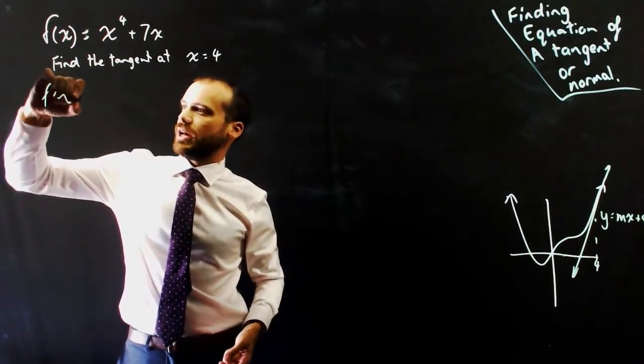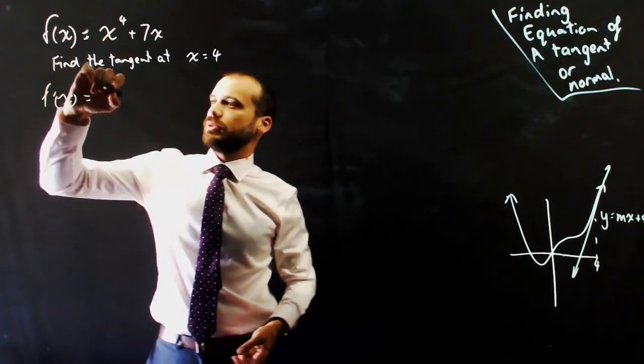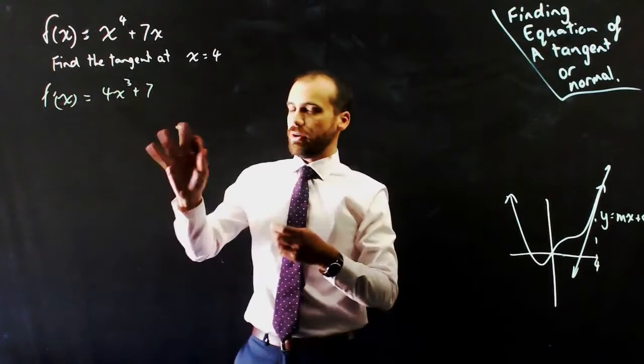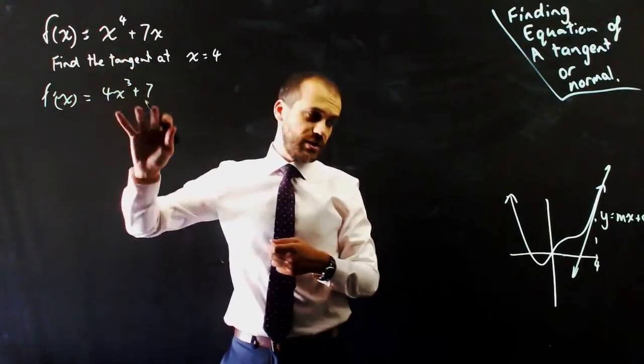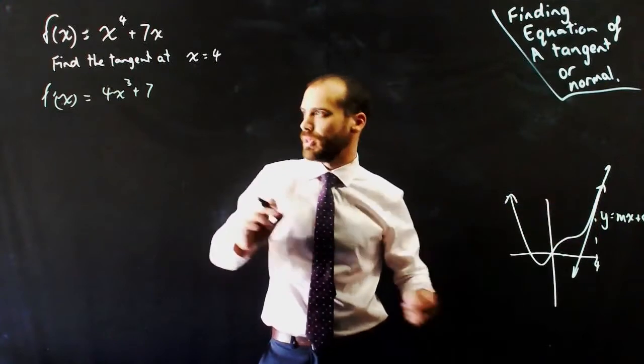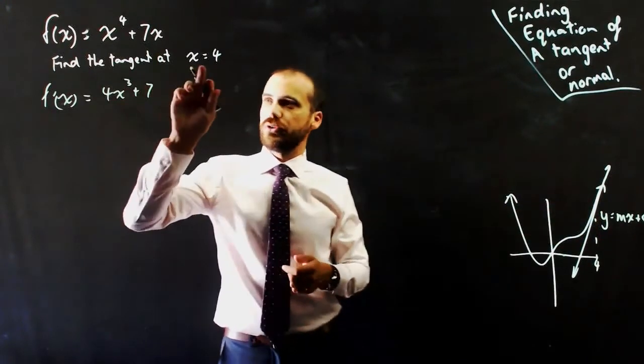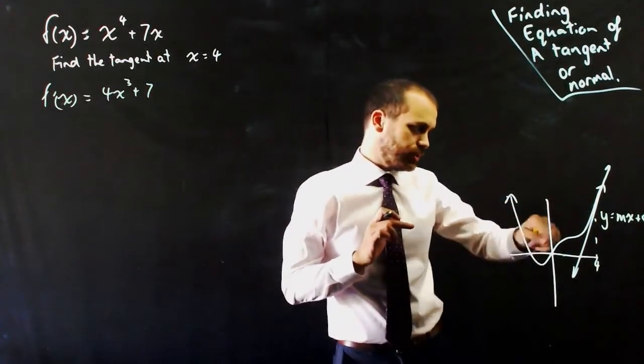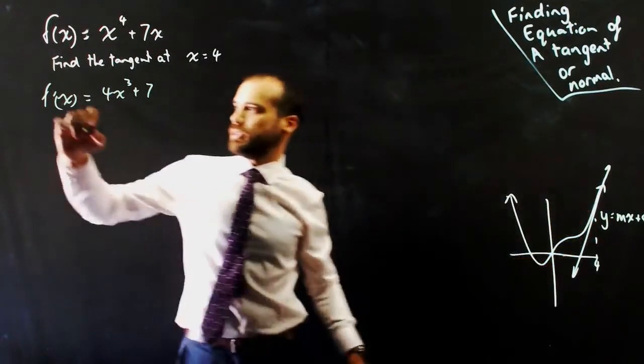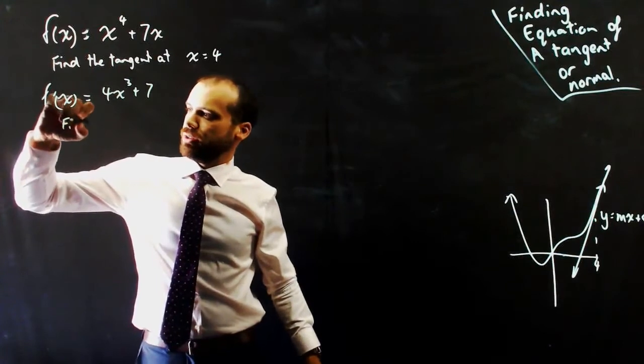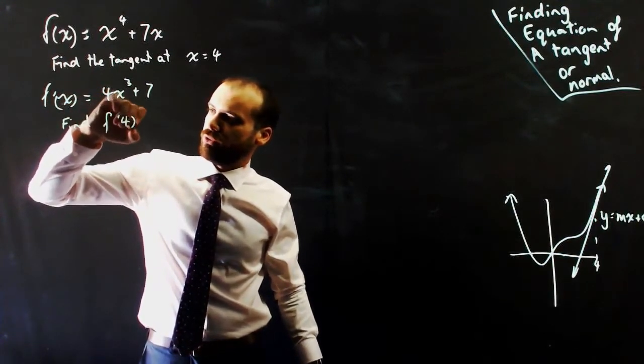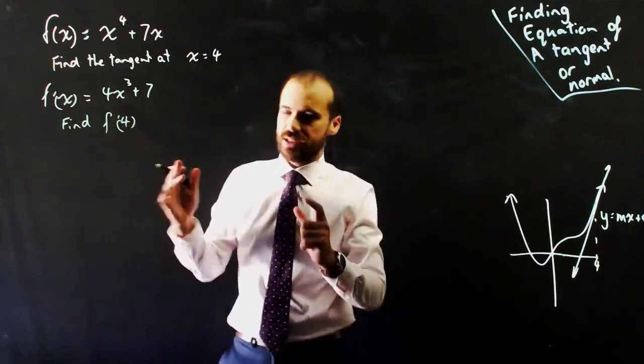So f'(x) = 4x³ + 7. So now I have the derivative function of this, a function that tells me the derivative of this equation at every single point. Now I want to know the derivative of this loopy equation at x = 4. So find f'(4) - that means find the derivative when x = 4.